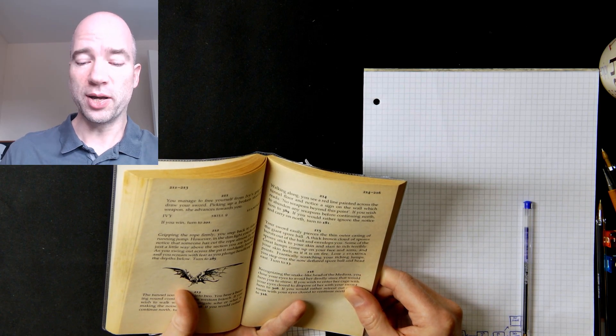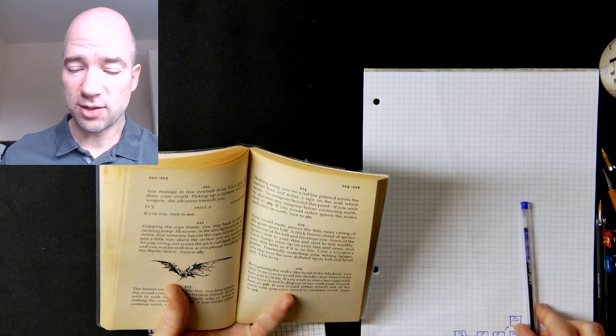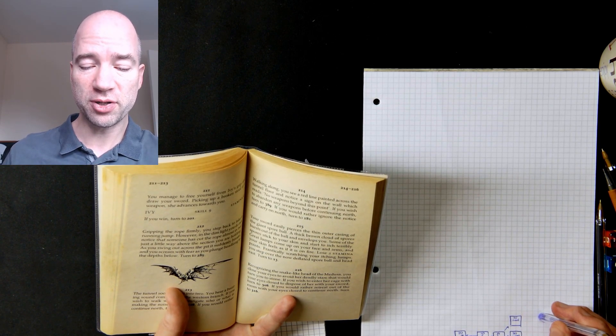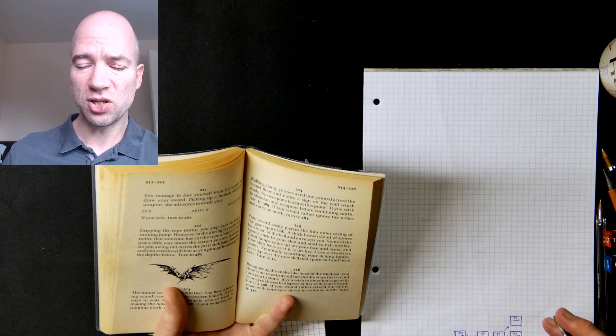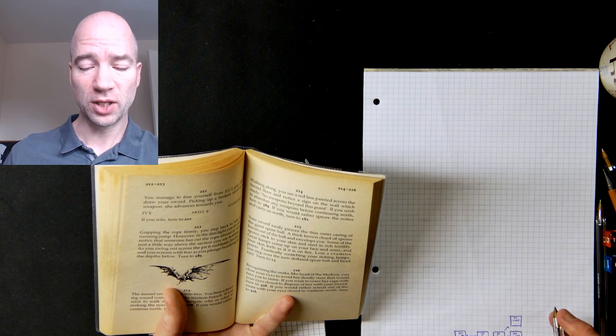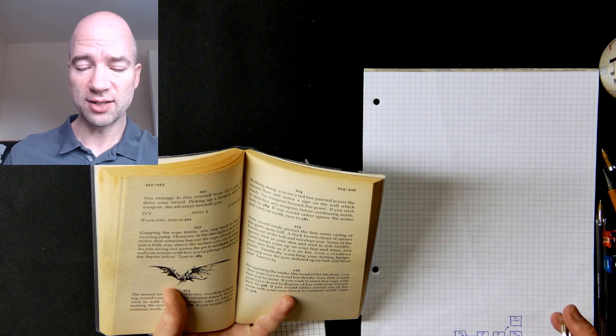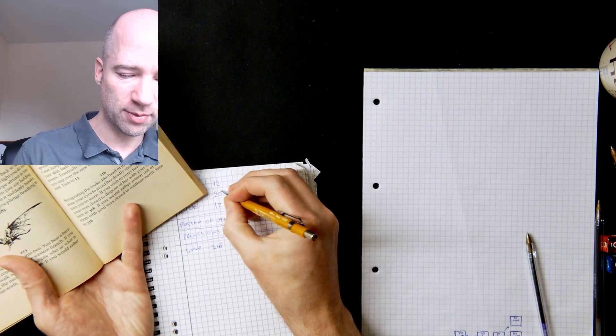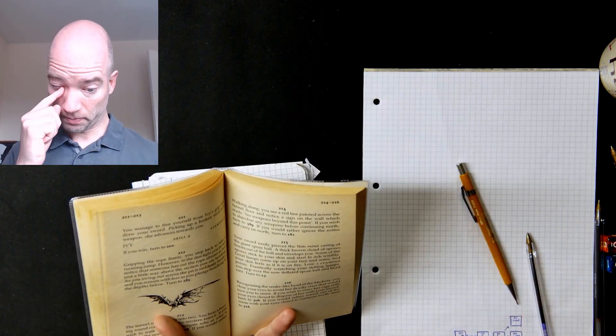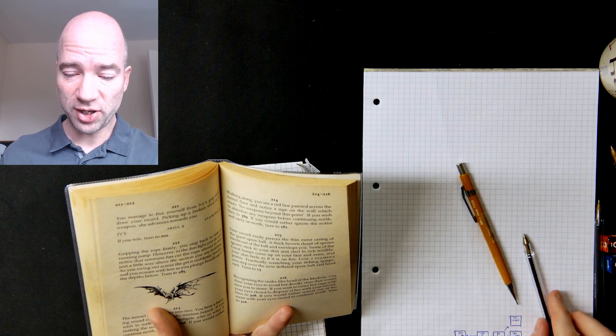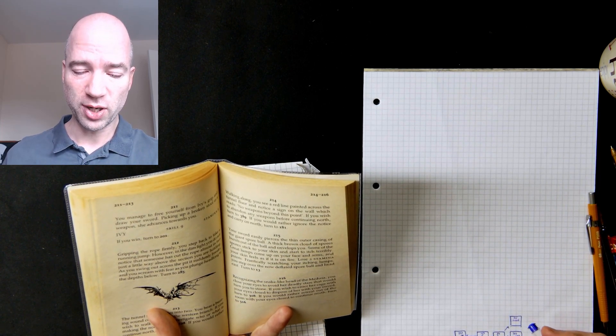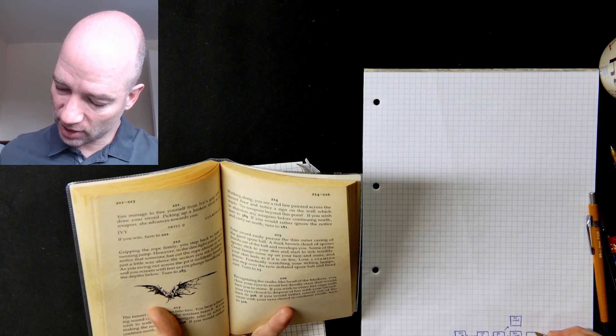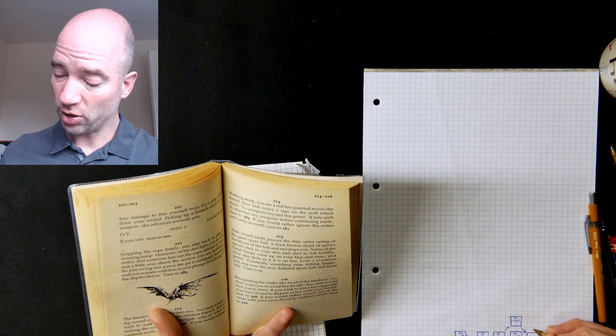Your sword easily pierces the thin outer casing of the giant spore ball. A thick brown cloud of spores bursts out of the ball and envelops you. Some of the spores stick to your skin and start to itch terribly. Great lumps come up on your face and arms and your skin feels as if it is on fire. Lose 2 stamina points, okay, so stamina 18. Frantically scratching your itching lumps, you step over the now deflated spore ball and head east. Turn to 13. So that probably wasn't the best decision, but it got me across without too much trouble.